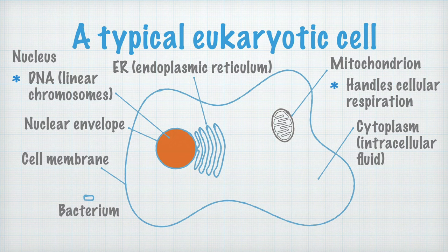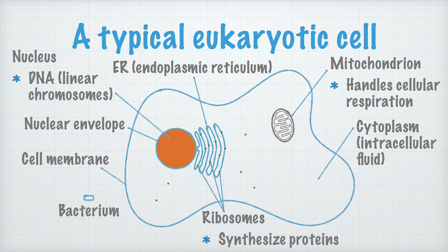The endoplasmic reticulum is often abbreviated ER. What I want you to learn about the ER right now is that it can be seen as a kind of enzyme station — on the ER, there are a lot of enzymes that perform different chemical reactions that the cell needs. For example, one can find a lot of ribosomes on the ER, even if there are also ribosomes in the cytoplasm. And as you remember, ribosomes are where protein synthesis takes place.